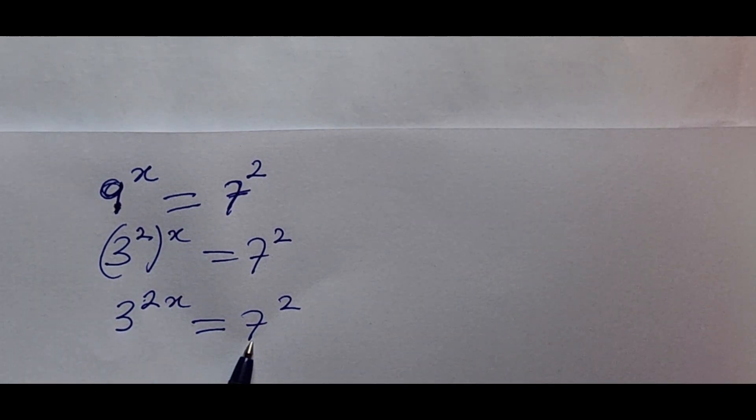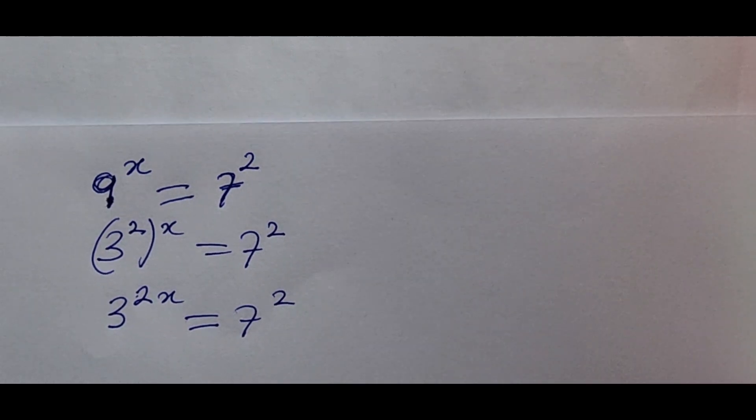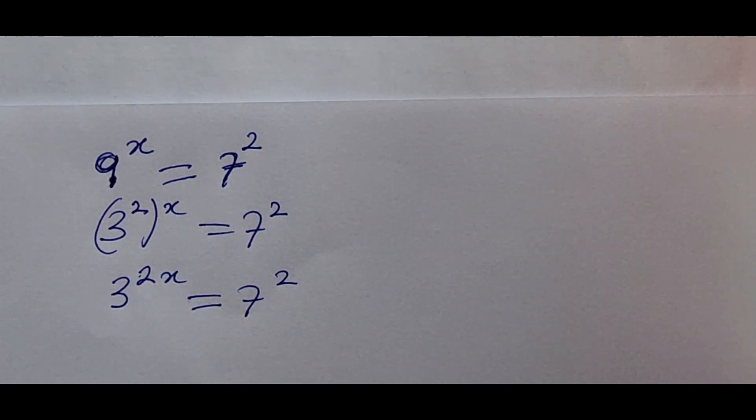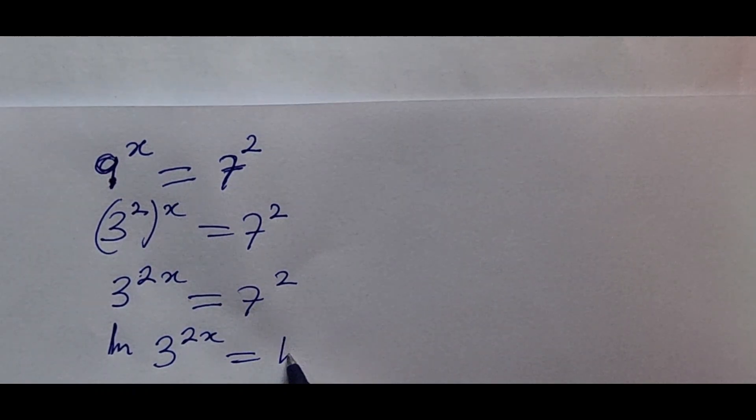This cannot be expressed in base 3, and so we take the natural log of both sides of the equation to be able to get the value of x. So this is going to give us the ln of 3 to the power of 2x is equal to the ln of 7 to the power of 2.